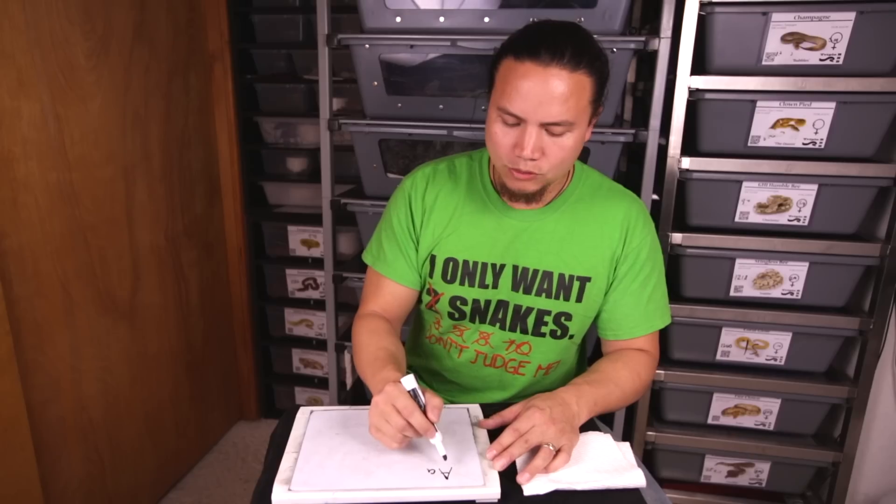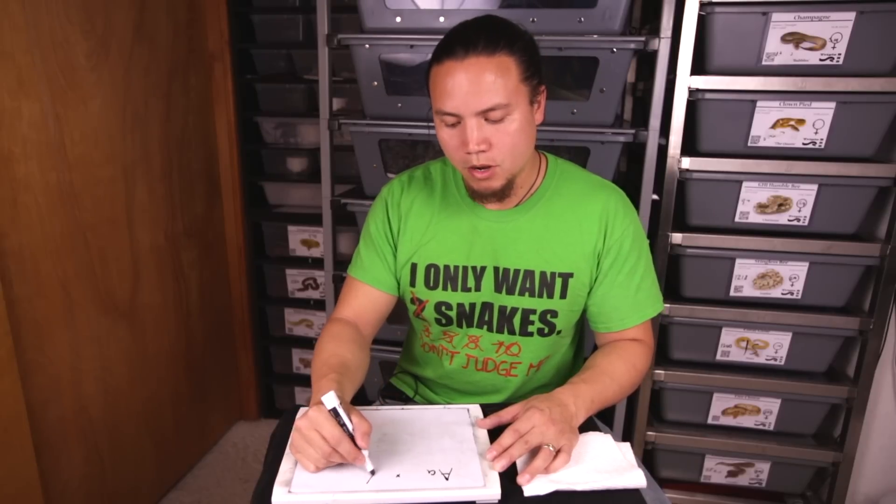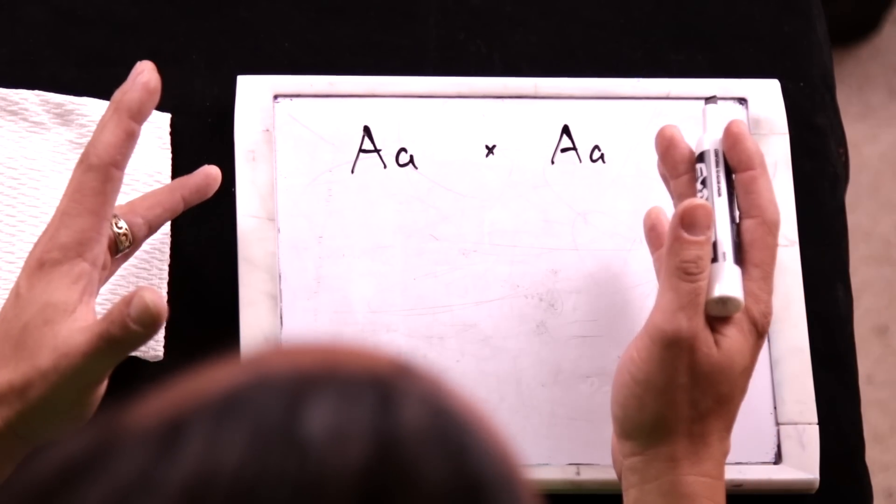Now let's take it a step further and get a little more complex with the Punnett square, and we'll do a het albino to het albino pairing. This will work for any simple recessive trait. When you have an animal that is heterozygous — remember that means it has two different alleles on the chromosome — dad has one allele for albino and the other allele is the wild type allele. Mom also has one albino allele and one normal allele, making them heterozygous for the albino trait.